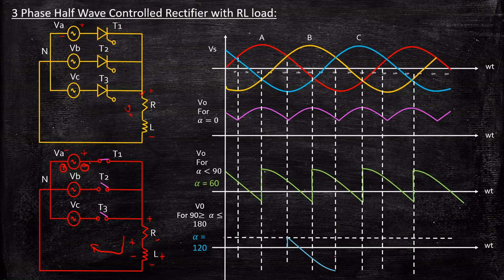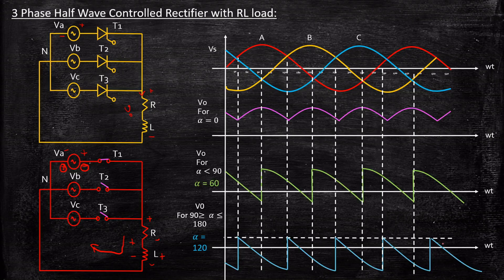At 270 degrees, after 120 degrees of conduction for T1, the next thyristor T2 is triggered. Consequently, the output starts following the phase B voltage waveform exactly. Then thyristor T3 is triggered and the output follows the source voltage with respect to phase C. We extrapolate the input and output sides at the start and end of the waveforms just as before.